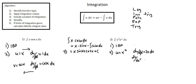The remaining function, e to the power of x, is dv/dx. To isolate dv, I'll multiply both sides by dx. So dv is e to the power of x dx. Integrating to get v, the integral of e to the power of x is e to the power of x.